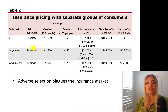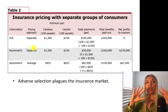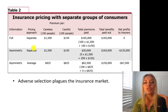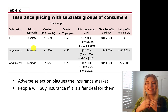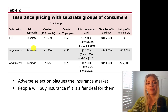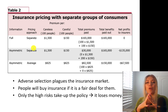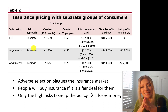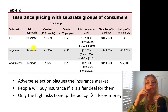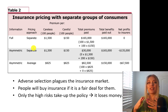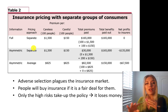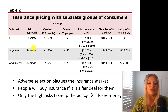Adverse selection plagues the insurance market. Companies do lots of things to understand what kind of driver you are. People will buy insurance if it's a fair deal — if it is an actuarially fair premium. Even risk-lovers will buy insurance if it is priced actuarially fairly. But if only the high-risk people take up the policy, the market will fail and insurance will not survive.